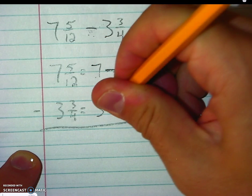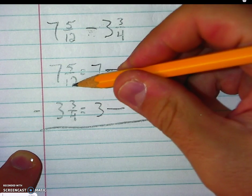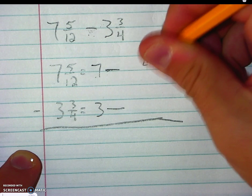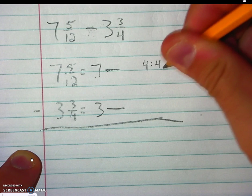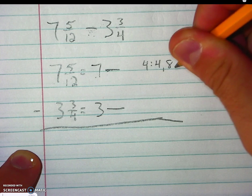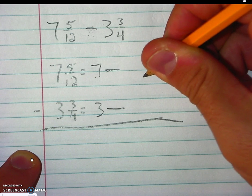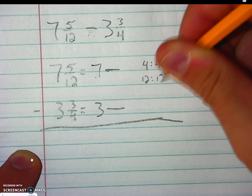Now my common denominator with 12 and 4, if I were to start listing my multiples of 4: 4, 8, 12, and listing my multiples of 12, I would get 12 here.